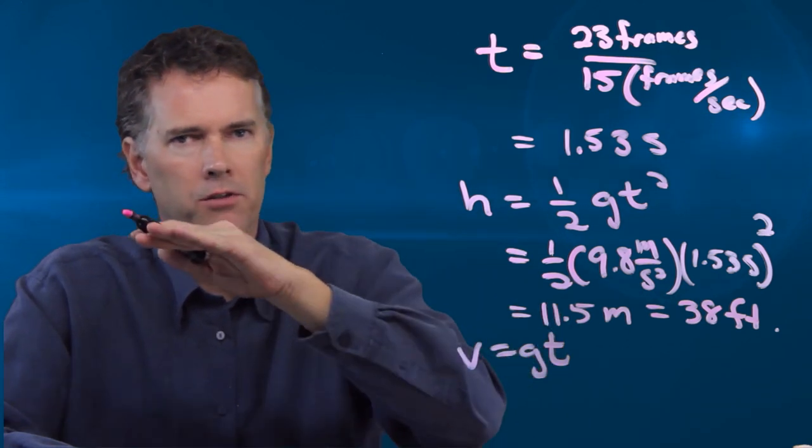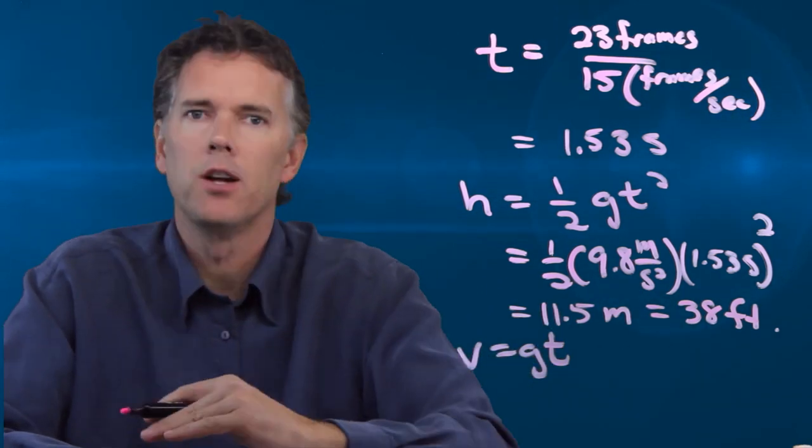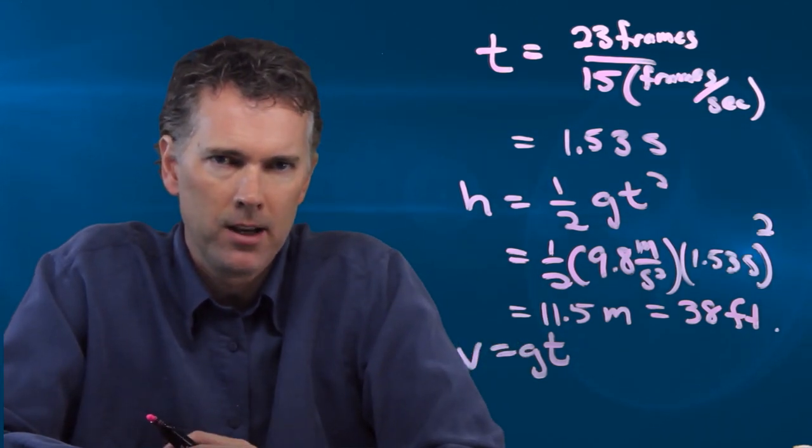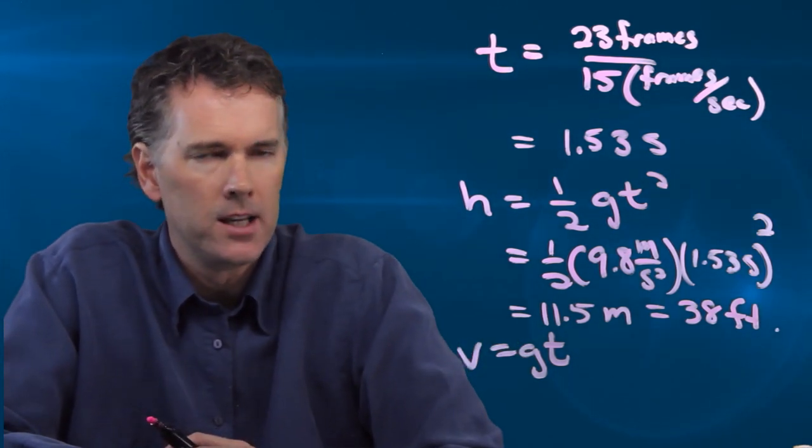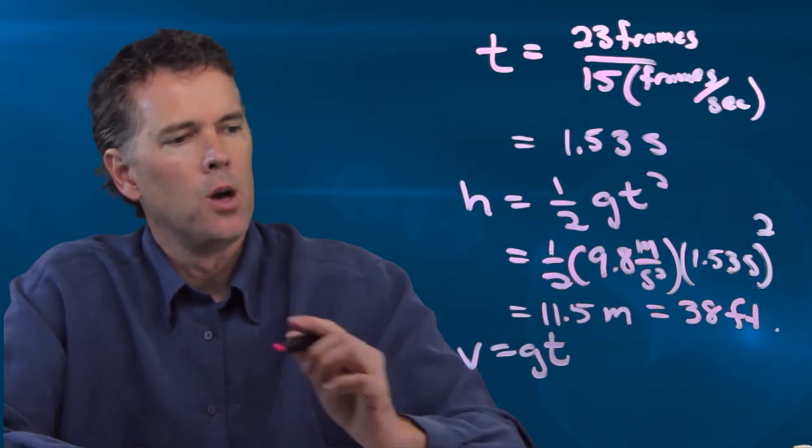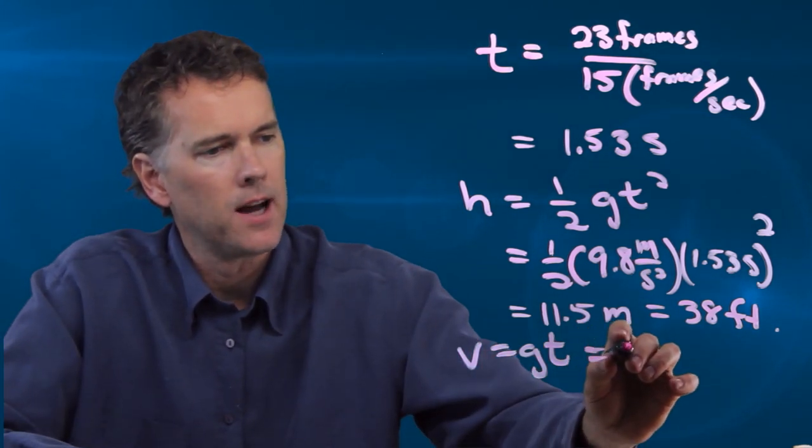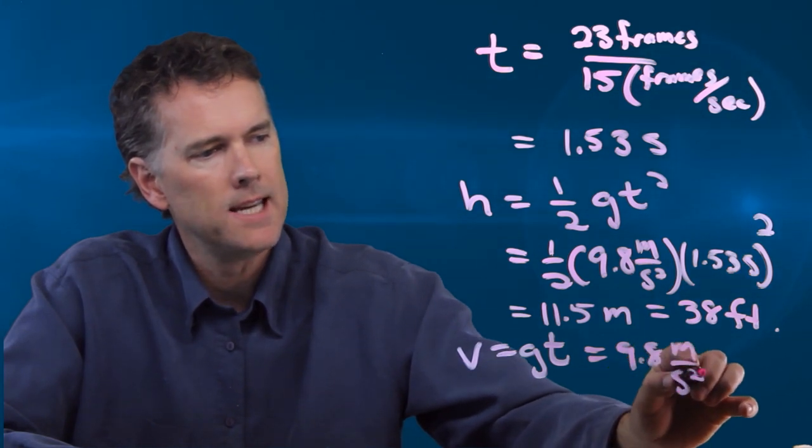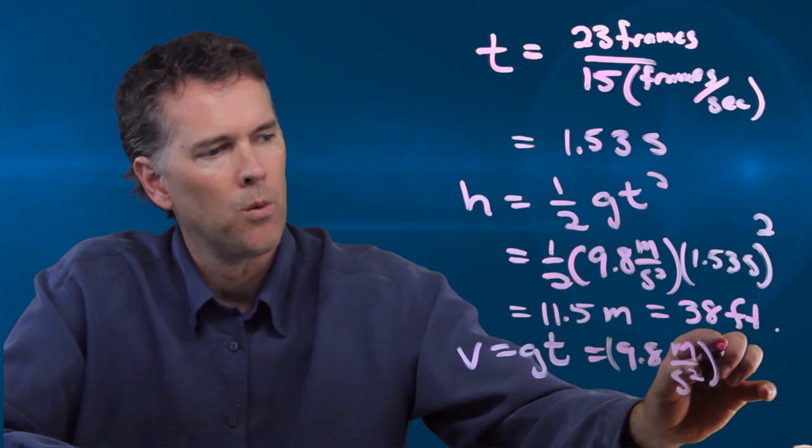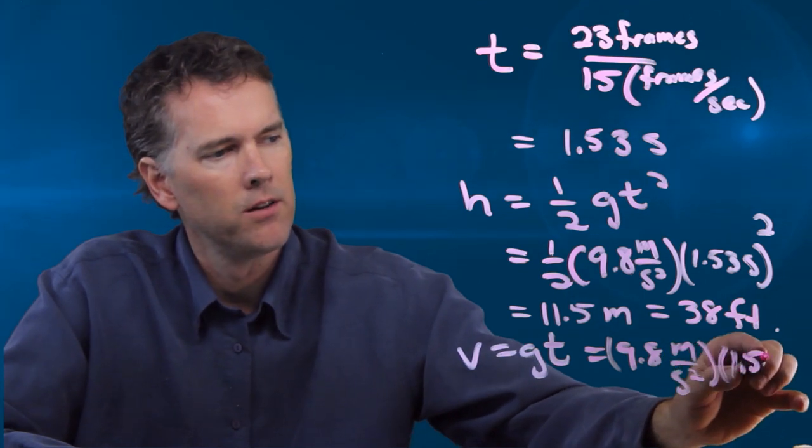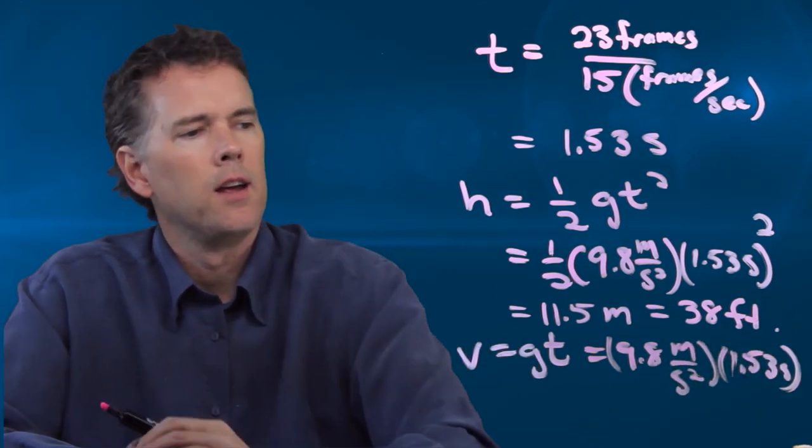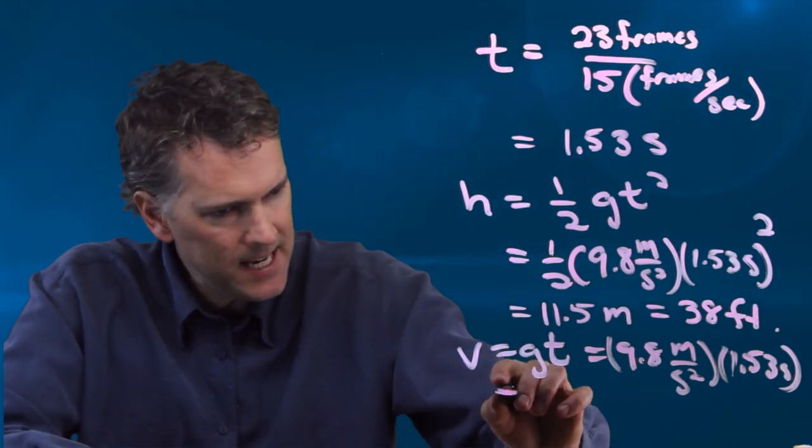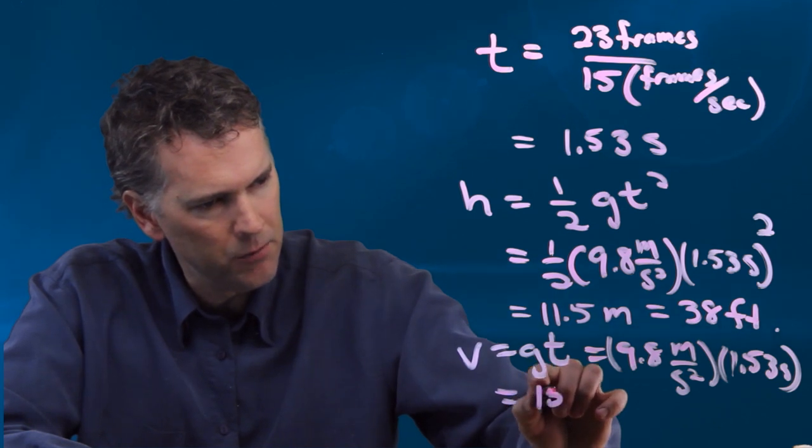We know that you start vertically from a rest. You're not jumping up or down. And so your vertical speed is just going to be related to gravity in this manner. V equals g times t. We know what g is. It's 9.8 meters per second squared. We know what t is, 1.53 seconds. And if we multiply that out, what do we get? We get about 15 meters per second.